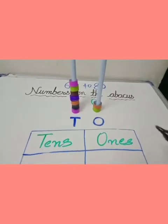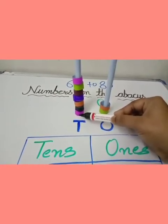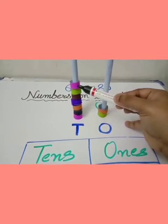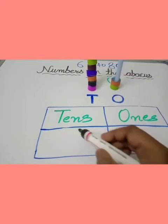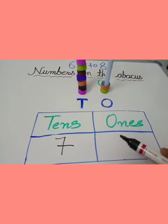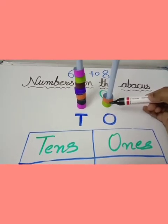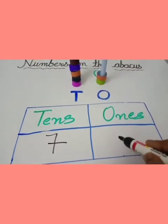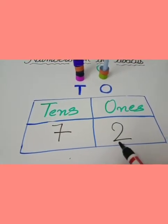Let's count one more time. On the tens place: 1, 2, 3, 4, 5, 6, 7 — 7 rings on the tens place, so write number 7. Count the ones place: 1 and 2 rings, so write number 2 on the ones place. Here we get the number 72.